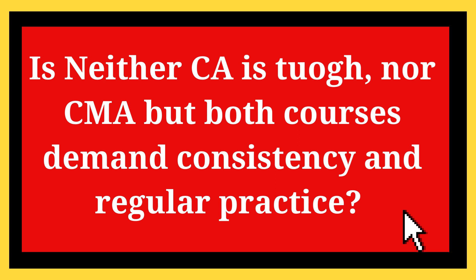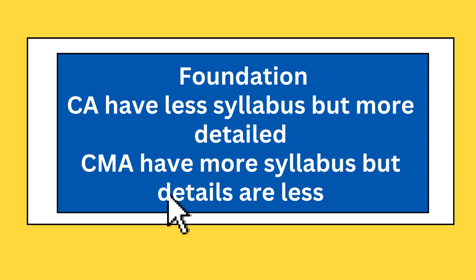CMA is costing — that is cost analysis. Cost analysis is the master area of CMA, and they will be guiding the company in this area. In CA, cost is not a major subject. At the foundation and intermediate level, this is a major difference.